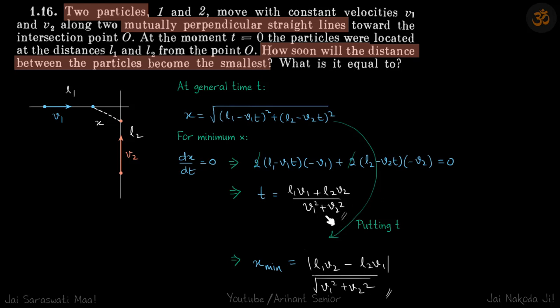After this time, the two particles will be at their closest. We substitute this value of t back into the expression for x, and with all other quantities given in the problem, we obtain x minimum. These are our answers.